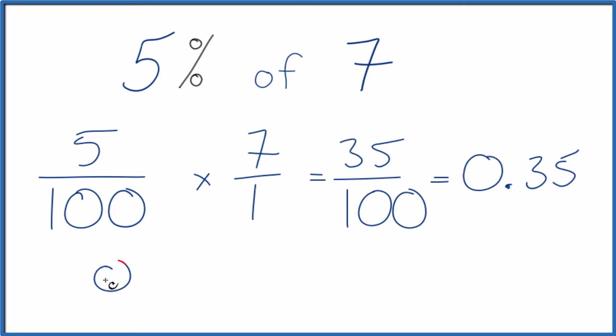5 divided by 100 is 0.05, and you can just multiply that times 7, and that would also give you 0.35 as your answer.